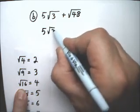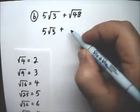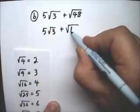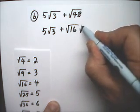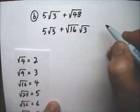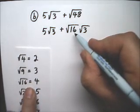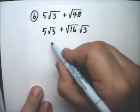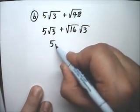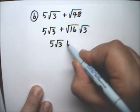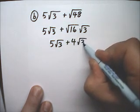So I'm going to split that into 16 times 3. 5 radical 3 plus the square root of 16 times the square root of 3. The square root of 16 is 4. So we have 5 radical 3 plus 4 radical 3.